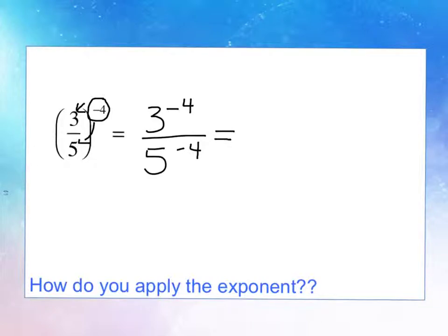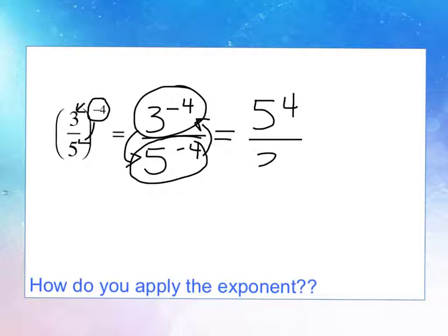And then because they're negative, I'm actually going to have to reciprocate in this case, bring the 3 to the negative 4th below and the 5 to the negative 4th up top to make them positive and happy. So my final response is 5 to the 4th all over 3 to the 4th.